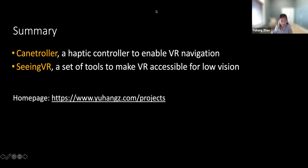We had a couple of questions. Yao, an accessibility researcher at Meta, asks: thank you for the talk, it's very eye-opening. I have a question about the cane controller. I'm thinking about a completely virtual alternative — no extra hardware beyond the Oculus controllers — it's like a white cane projected in VR, like a saber in Beat Saber, capable of interacting with virtual objects. How does it compare to Cane Controller, and what are the limitations and potential benefits for cane users?